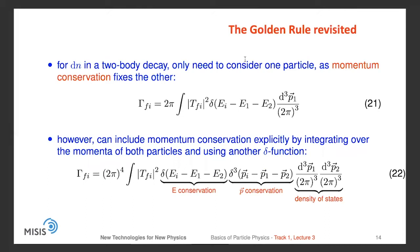For dΩ in the two-body decay, we only need to consider one particle since momentum conservation fixes the other. Therefore we get the rather simple expression. However, we can include momentum conservation explicitly by integrating over the momentum of both particles and using another delta function. We insert a term corresponding to momentum conservation, another integral, an additional factor of (2π)³, and get a symmetrical expression in terms of d³p₁, E₁, and E₂.